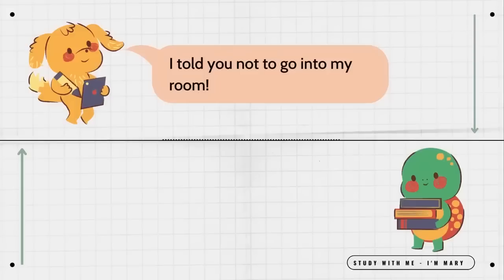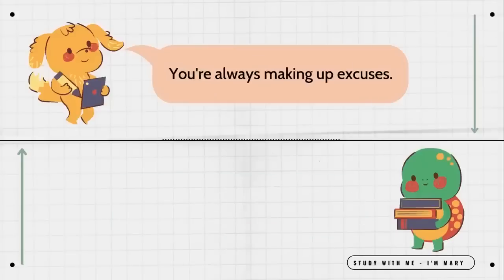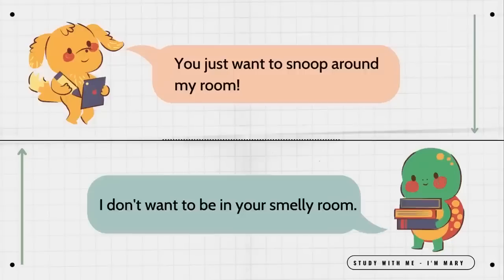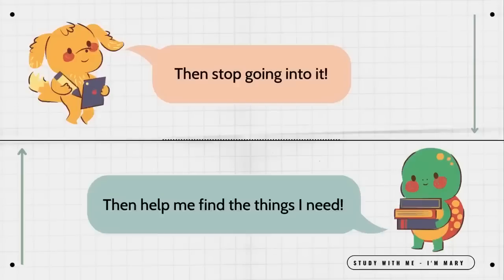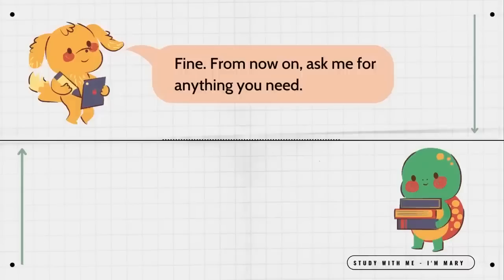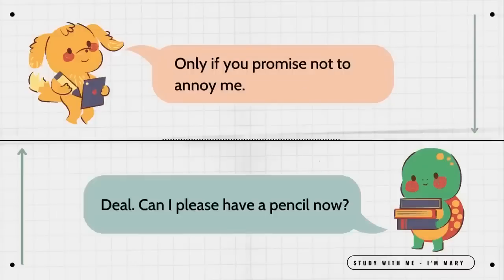I told you not to go into my room. I was just looking for a pencil. You're always making up excuses. My explanations are not excuses. You just want to snoop around my room. I don't want to be in your smelly room. Then stop going into it. Then help me find the things I need. Fine. From now on, ask me for anything you need. You promise not to get angry with me? Only if you promise not to annoy me. Deal. Can I please have a pencil now?